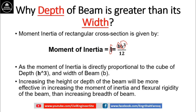Increasing the height or depth of the beam will be more effective in increasing the moment of inertia and flexural rigidity of the beam than increasing the breadth. It means that if you want to increase the moment of inertia of a section, you can increase it more effectively by increasing height or depth instead of increasing breadth or width, because moment of inertia is directly proportional to the cube of height.